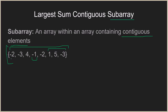The only condition is that the subarray must have contiguous elements, which means you cannot have a subarray with, say, minus two and four without including everything in between. If you want those two elements, you need to include minus three as well, because that is where the condition of contiguous elements is met.